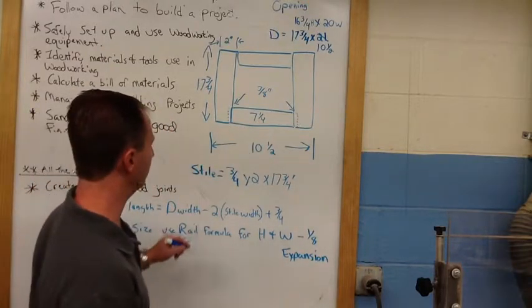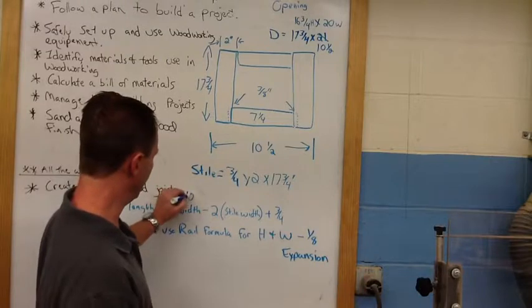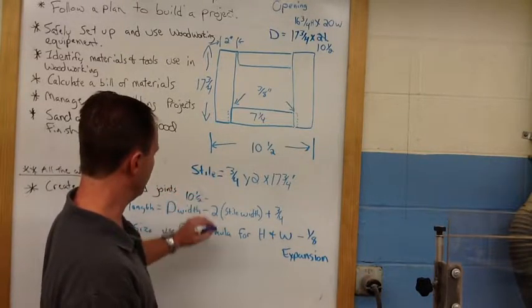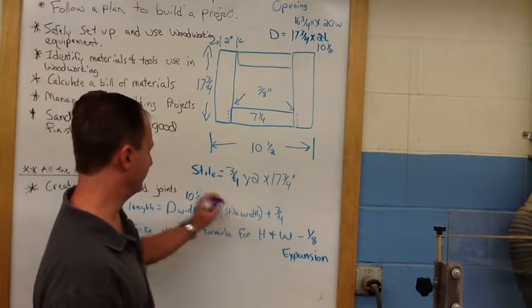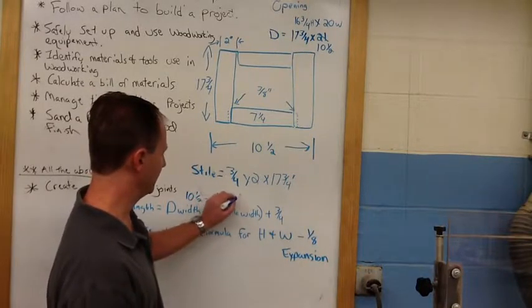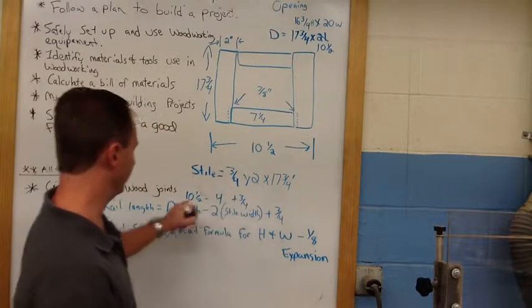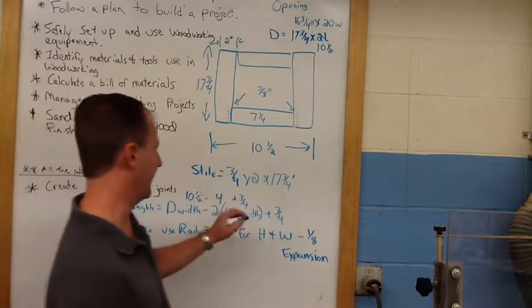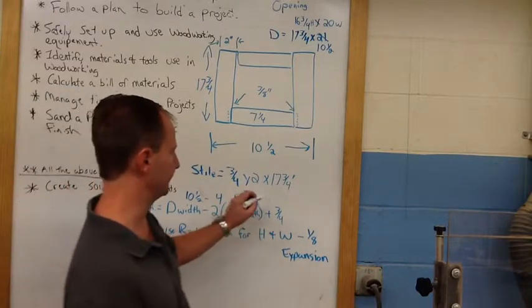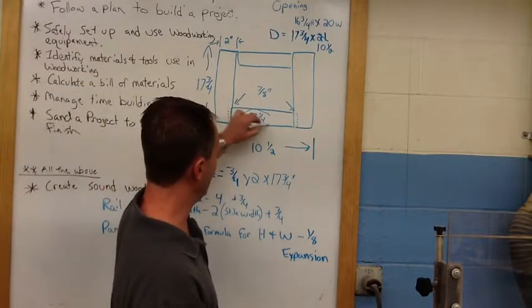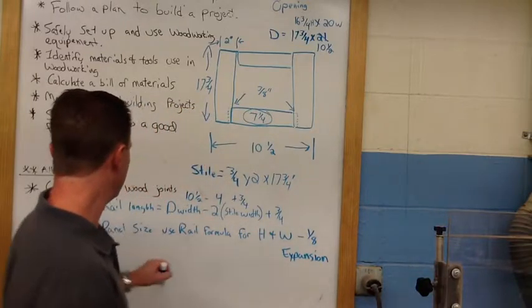So, when we plug our numbers in here, we have 10 and a half minus 2 times 2, which is 4, plus our 3 quarters. So when we do this, 10 and a half minus 4 is 6 and a half, plus 3 quarters gives us 7 and a quarter, which is what I have right here.